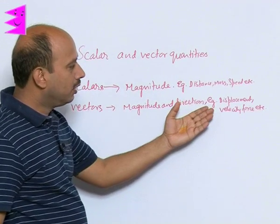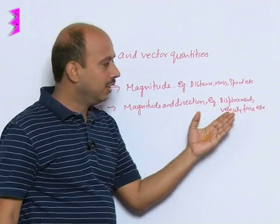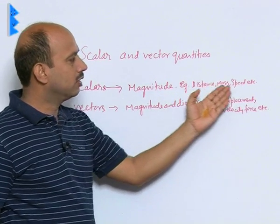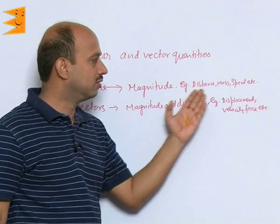So, see these quantities whenever are described, they need magnitude as well as direction, whereas, these quantities do not require direction for their description.